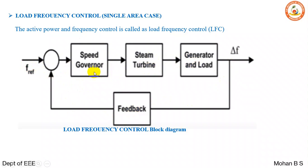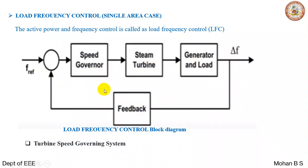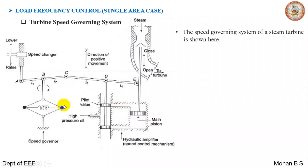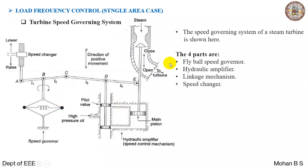In this video, we will be understanding the working principle behind the speed governor and its various parts — the turbine speed governing system. This is the block diagram representing the speed governing system of a steam turbine, and there are four main parts.